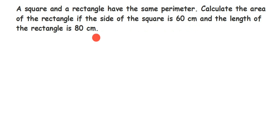So first, it's given that the square and rectangle have the same perimeter. The side of the square is 60 centimeters, and the length of the rectangle is 80 centimeters. We have to find the area of the rectangle, which requires both length and breadth, but here we only know the length, which is 80.